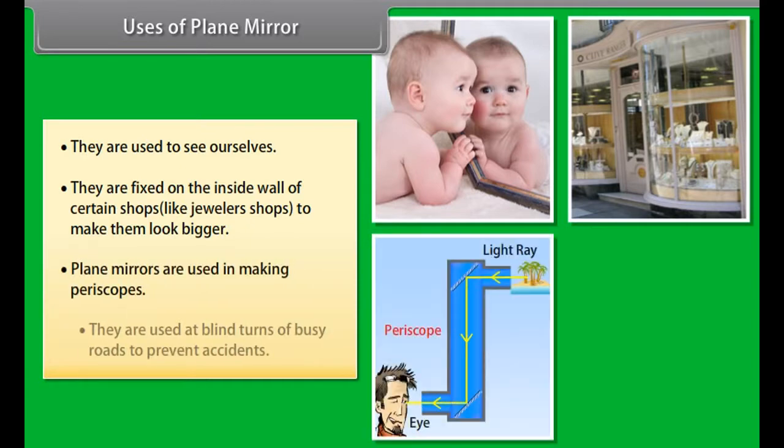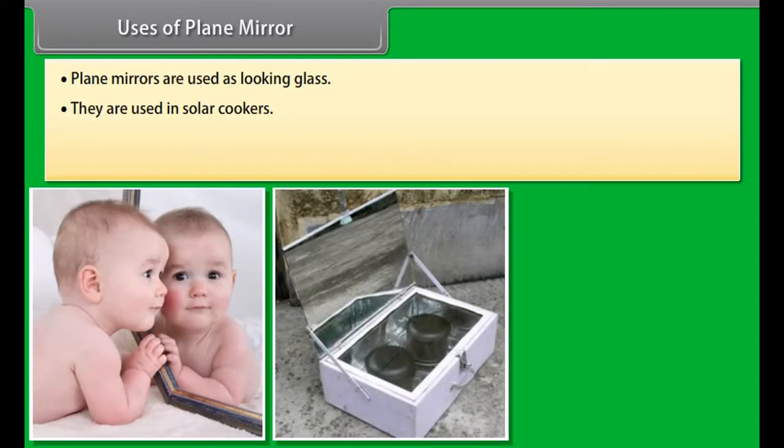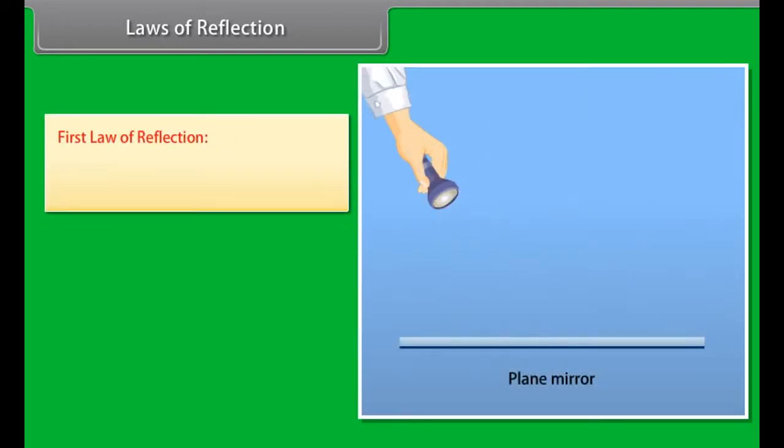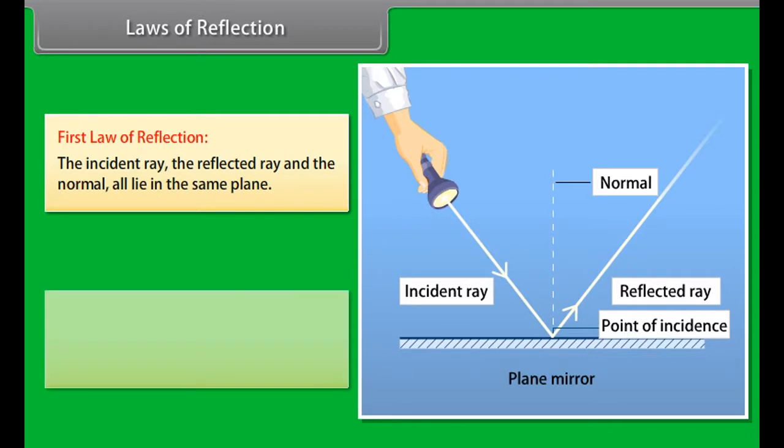Characteristics of an image formed by a plane mirror: The image formed is virtual - it cannot be received on a screen. The image formed is erect. The size of the image is the same as the object. The image formed by the plane mirror is at the same distance behind the mirror. The image formed is laterally inverted, sideways reversed.